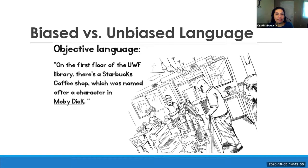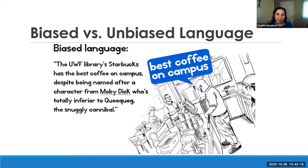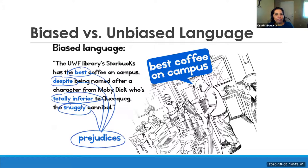Here's an example of biased versus unbiased language. An unbiased sentence simply states: 'On the first floor of the UWF library, there's a Starbucks coffee shop, which was named after the character in Moby Dick.' It's just telling you the facts. A biased sentence says: 'The UWF library Starbucks has the best coffee on campus despite being named after a character from Moby Dick who's totally inferior to Queequeg, a snuggly cannibal.' This one uses prejudice and opinion, showing the author's bias — making it a poor resource for an assignment.